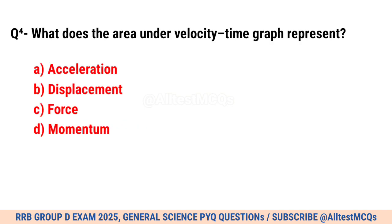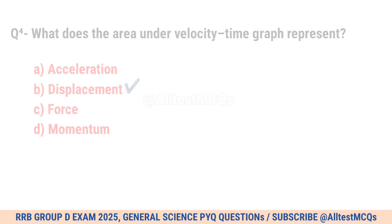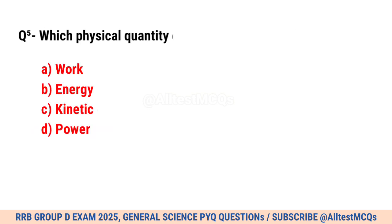Question No. 4. What does the area under velocity-time graph represent? Correct option is B. Displacement.